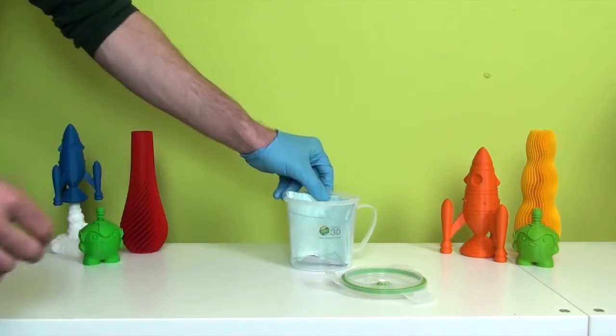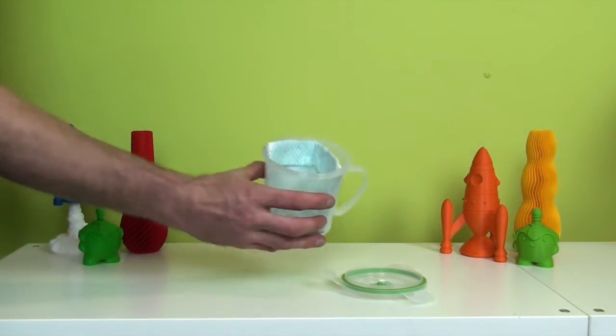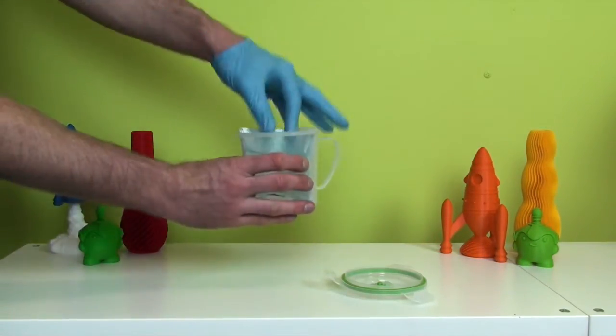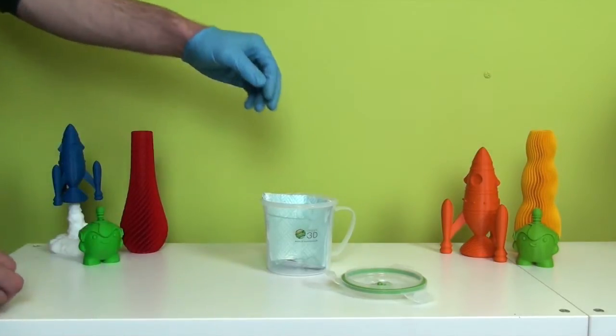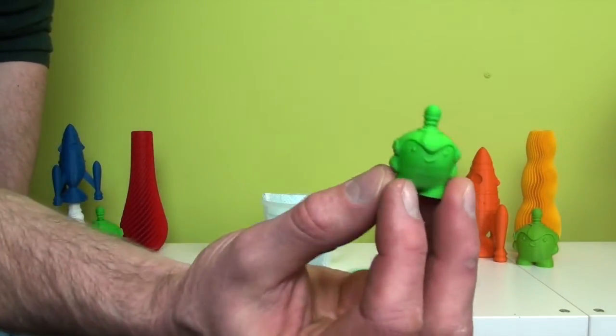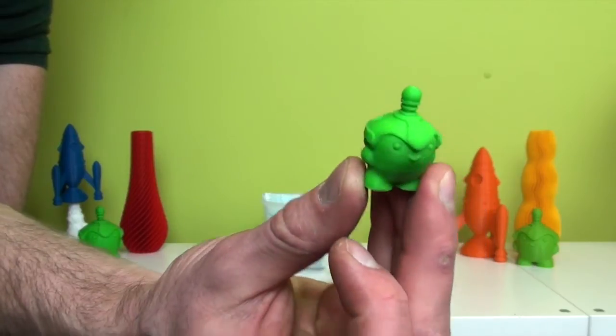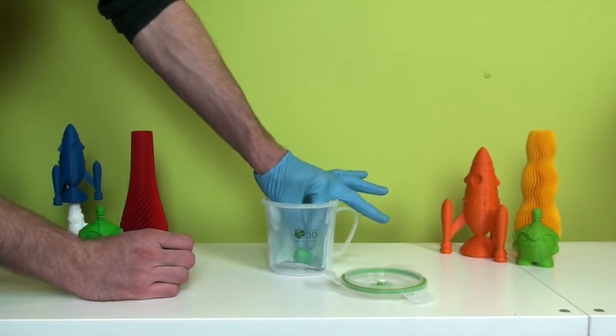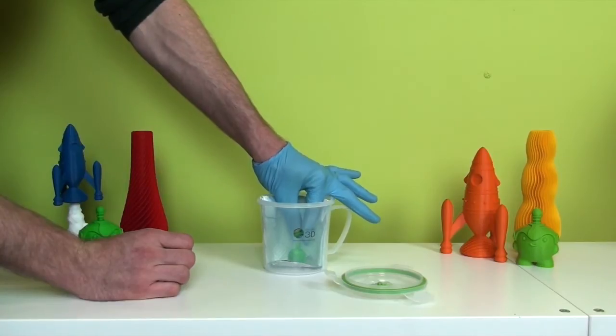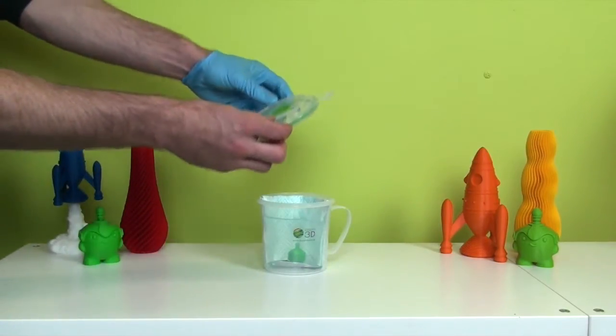Now all we need to do is place the print in the container. This is our company mascot Dreamo. It was printed in Z-ABS on the Zortrax M200. It's got a really nice matte finish as it is, but we're hoping to get a nice high gloss finish with the acetone vapors.